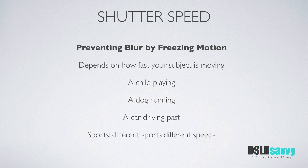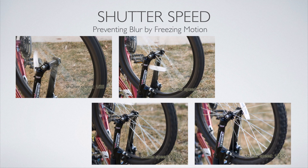Sports photography is a classic situation where a fast shutter speed is important. Different sports require different shutter speeds — hockey, which is so fast, will require around 1/1000th of a second to freeze the motion, while slower sports can get away with a slower shutter speed. I took some pictures to show how something moving looks at different shutter speeds: I took my daughter's bike, turned it upside down, started spinning the tire, put the camera on a tripod, and took photos at different shutter speeds.